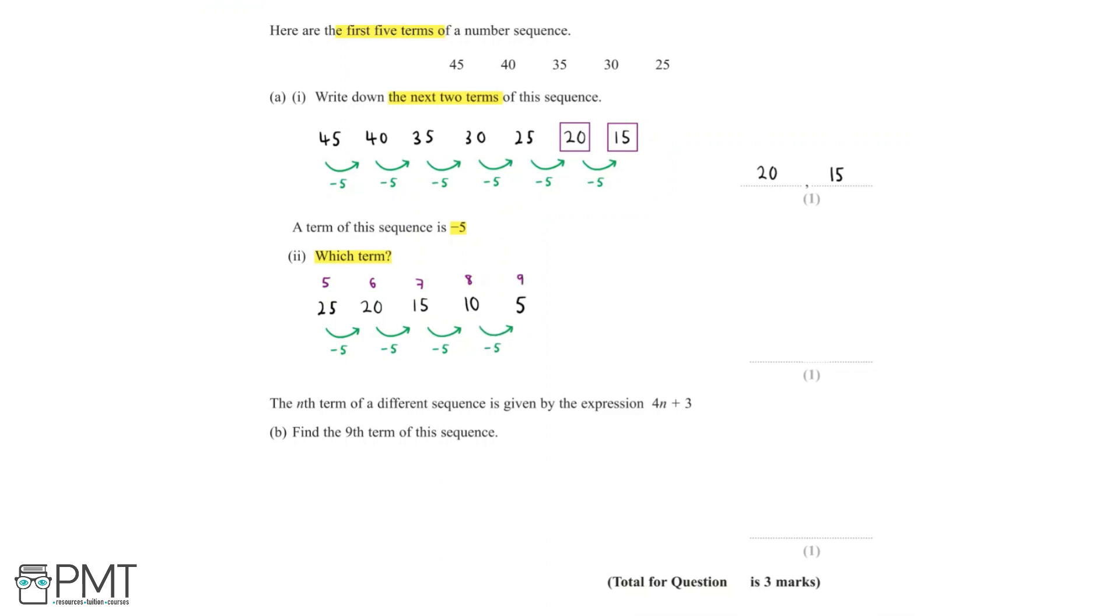And we can keep going until we find the term of the sequence which is equal to -5. So now let's take away 5 again, and we can see that the 10th term in the sequence is equal to 0.